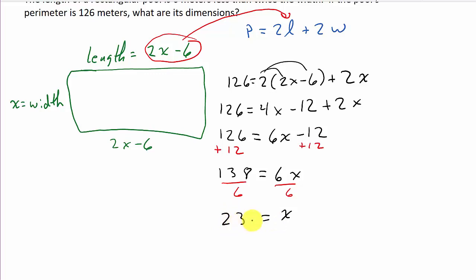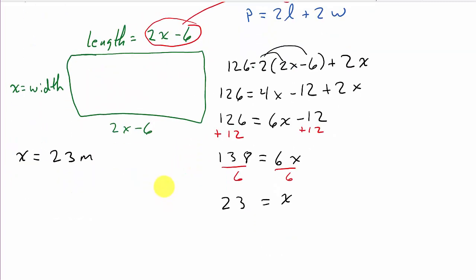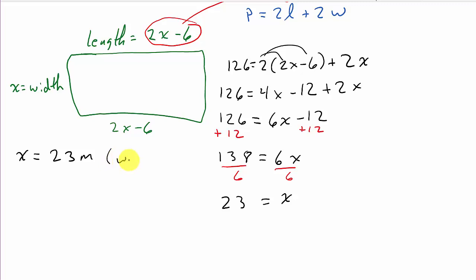So this x is the width. Okay, so we've got x equals 23. And that is, and you can see we're in meters. And so this is our width.